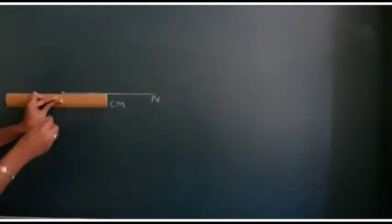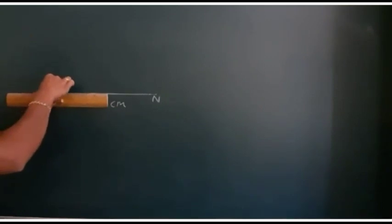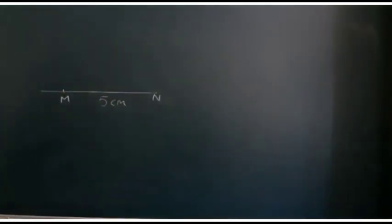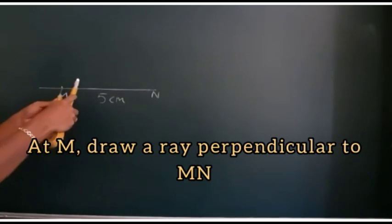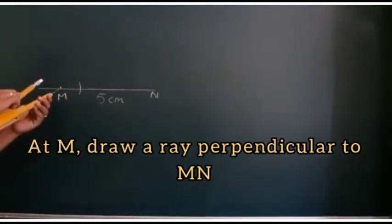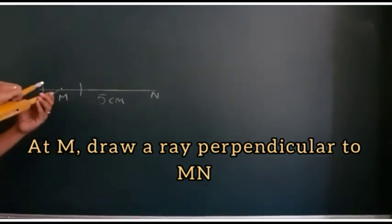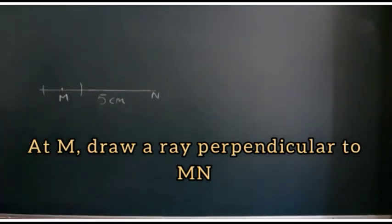Now we extend MN on the left side. This is for drawing a perpendicular line to MN. At M draw a perpendicular to MN.